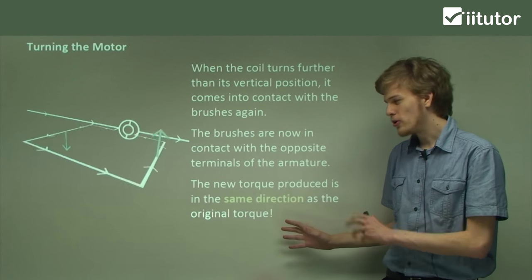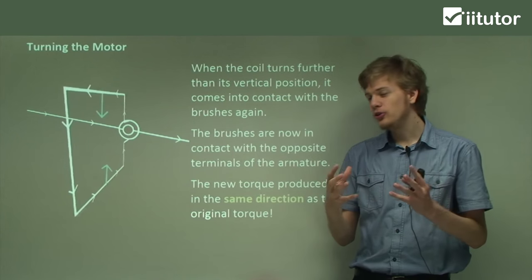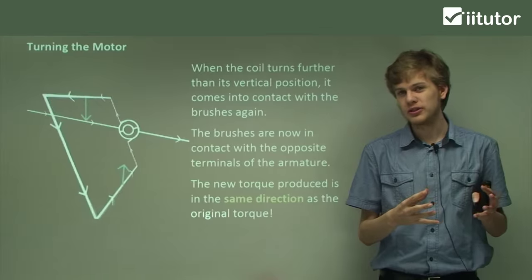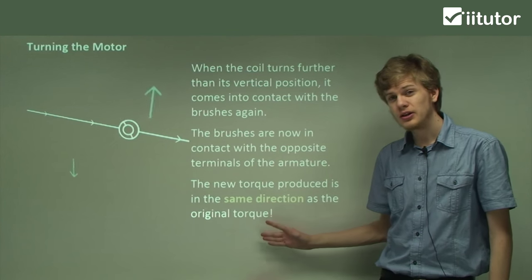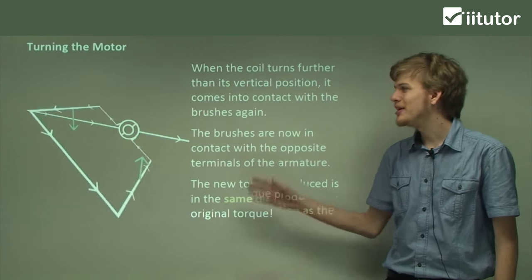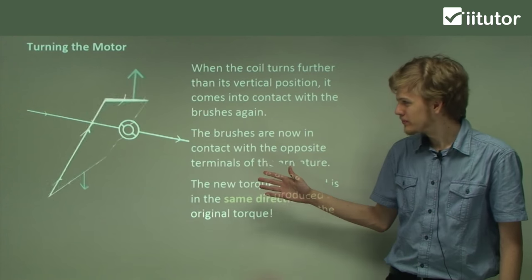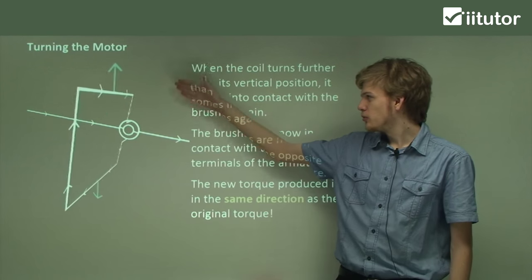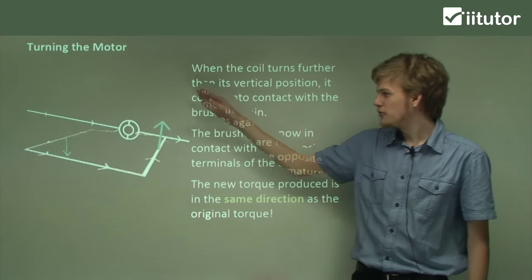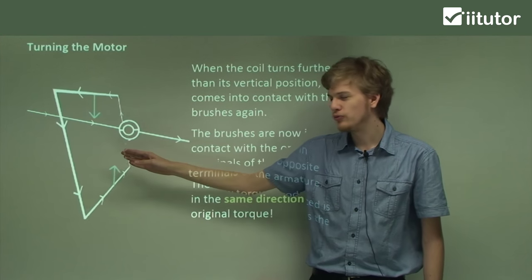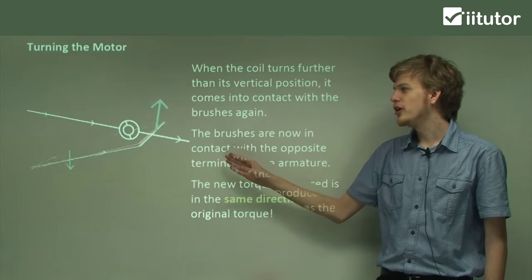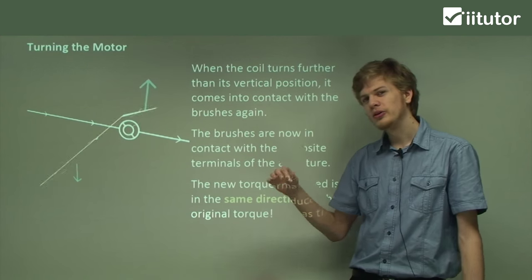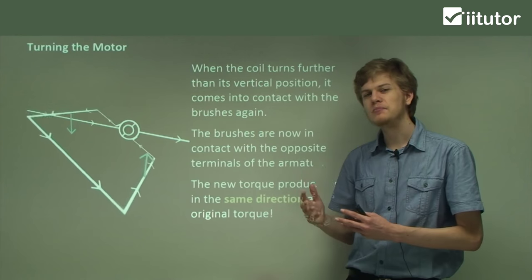So the new torque that's produced by the external current connecting to the other side of the split ring commutator will be in the same direction as the original torque. In this case, it will be anti-clockwise. Can you see how that works? When the current reverses, it means that the left side is once again experiencing a downward force, and the right side is once again experiencing an upward force. So it's always moving in the same direction.